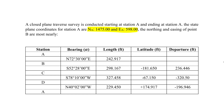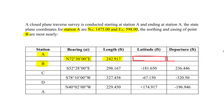We're asked to find the northing and easting of point B. We start at station A and end at station A. We're given the bearing between A and B, B and C, and D and A, along with the corresponding lengths. We're focusing on points A and B — we have the bearing and length, but the latitude and departure are missing.